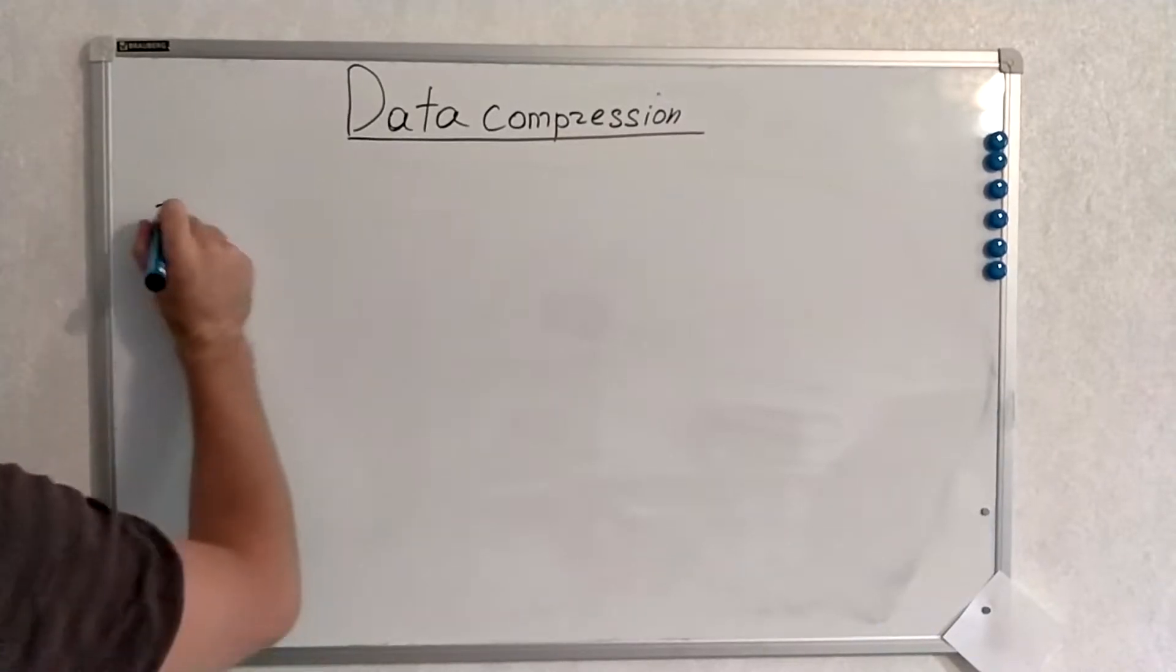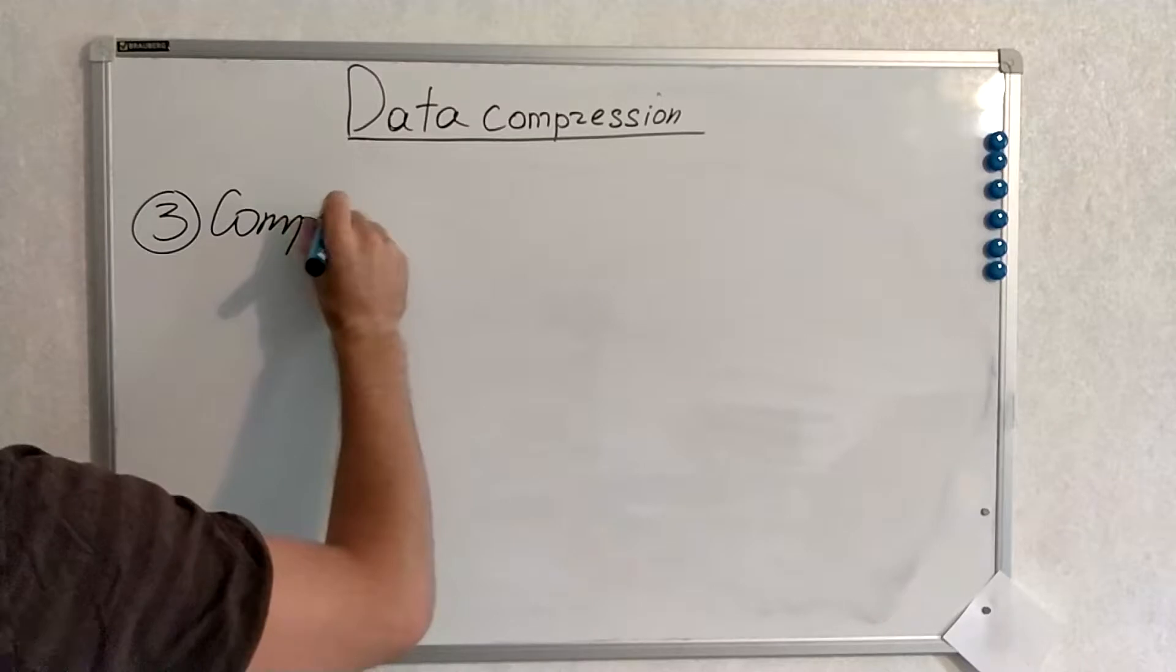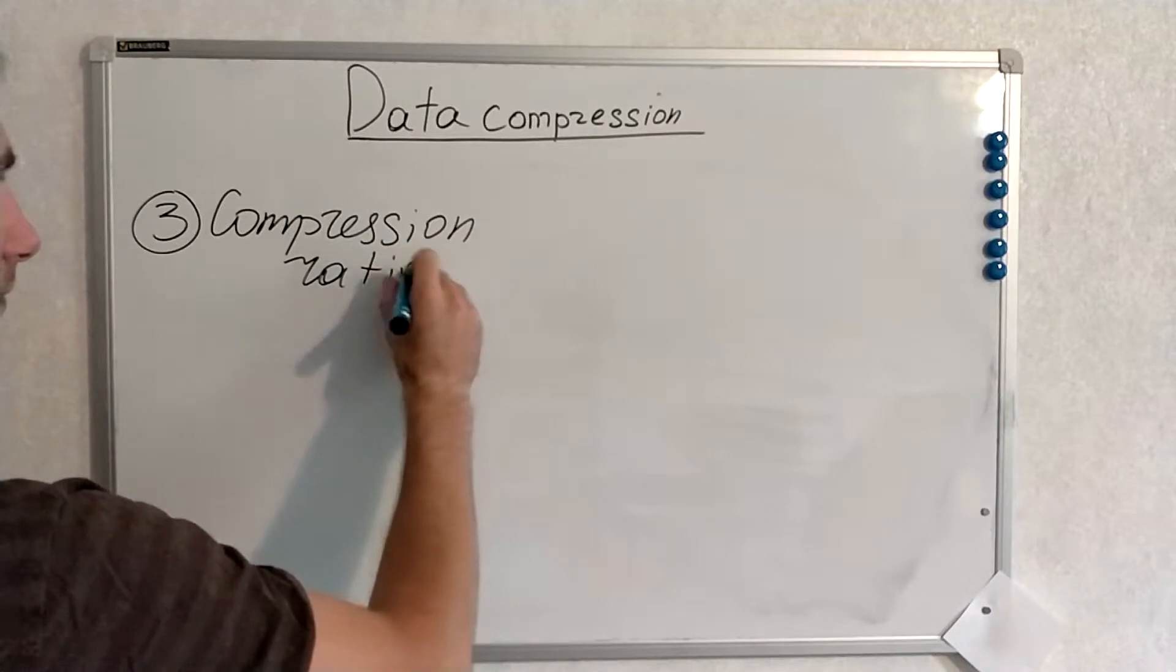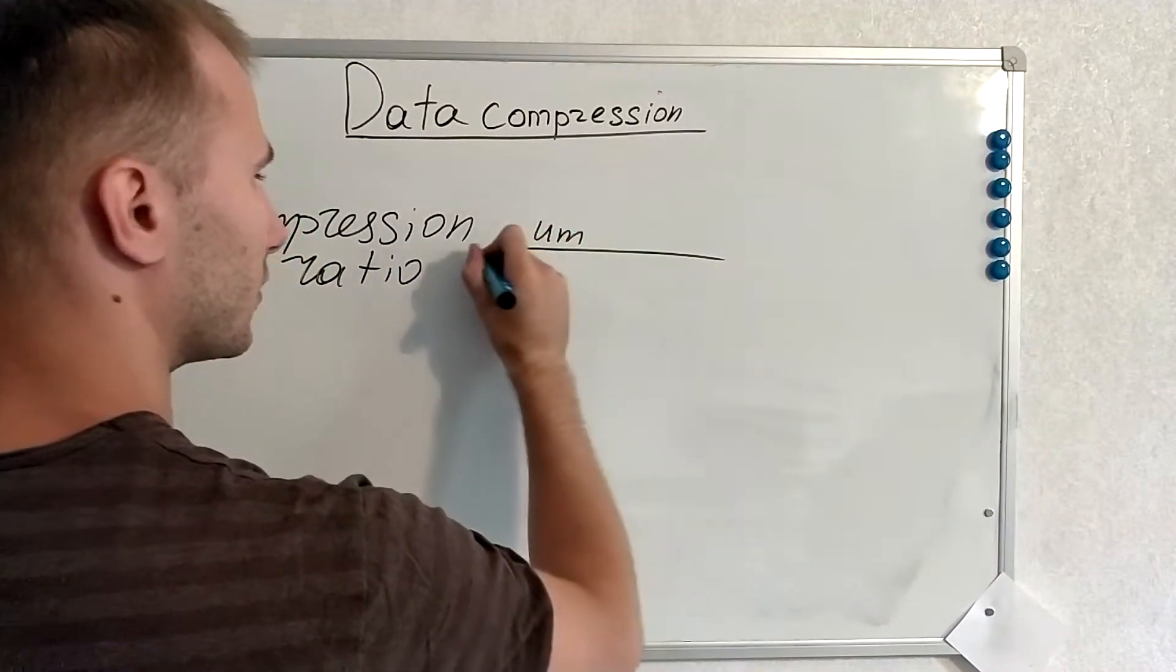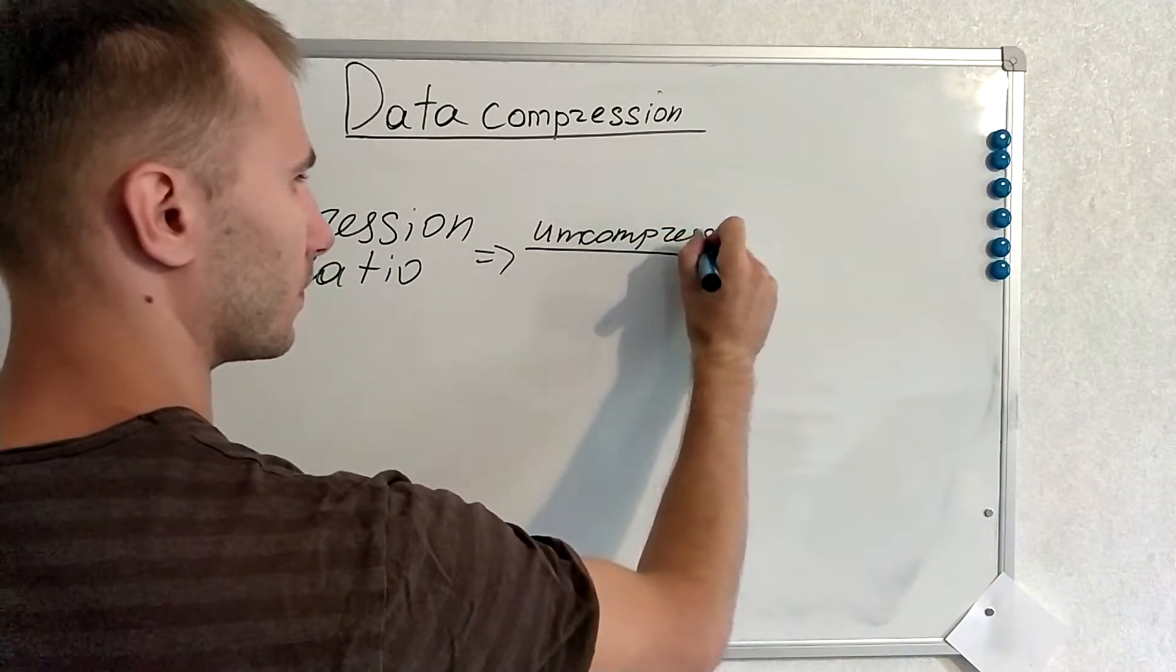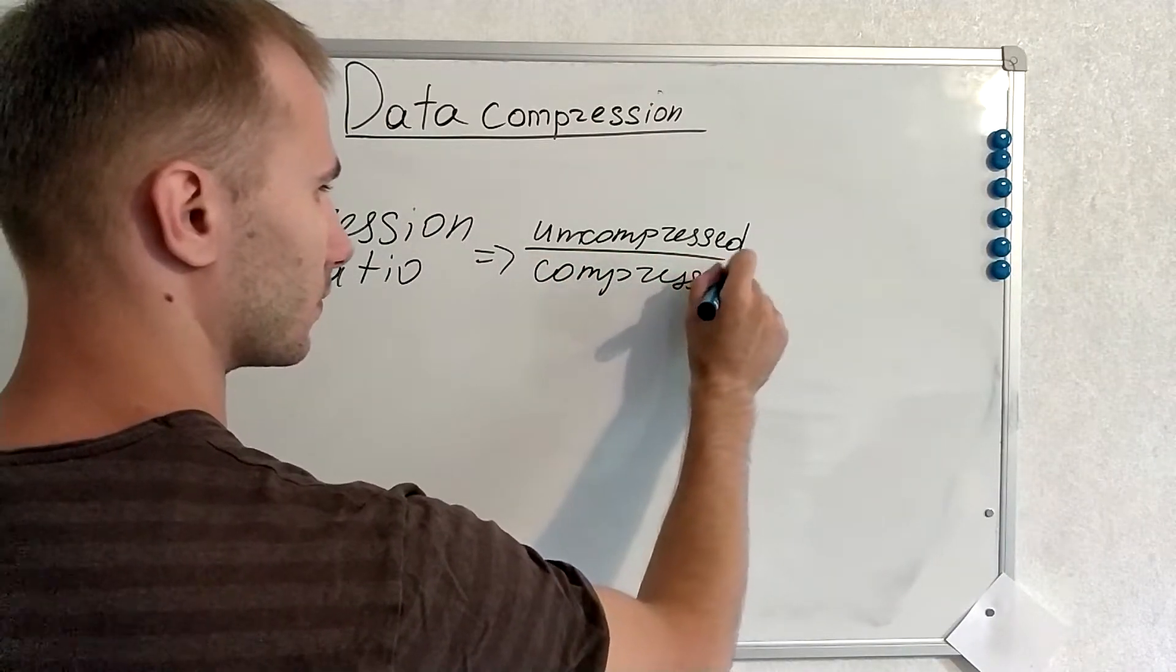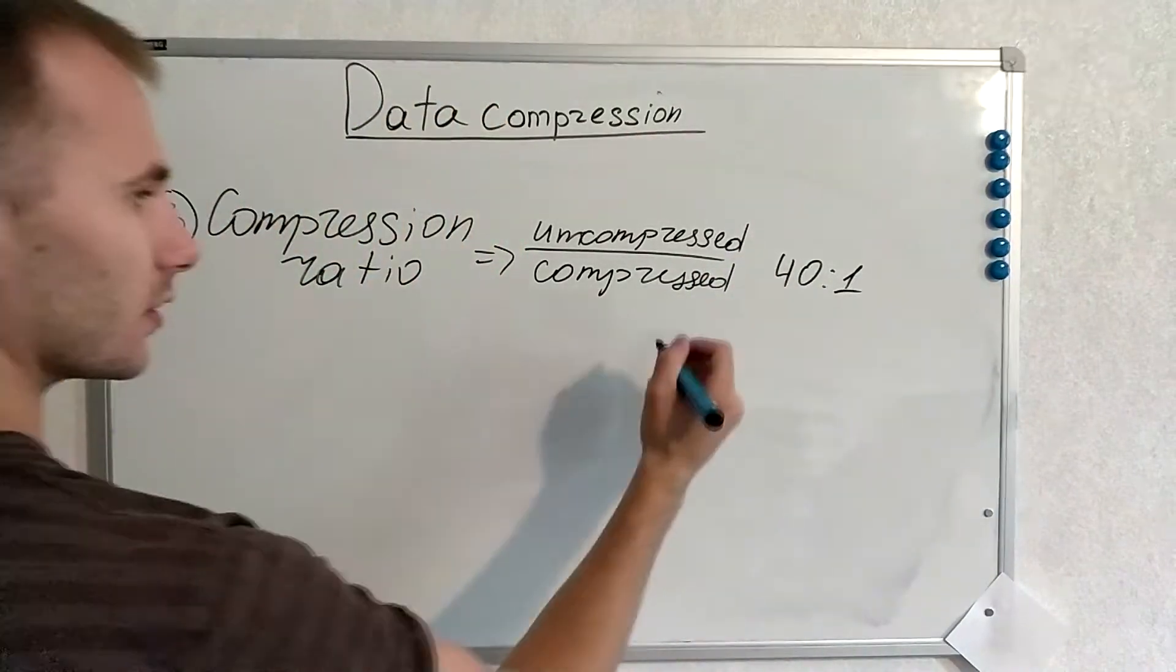Okay, our first definition. Compression ratio. This is the amount of uncompressed data divided by compressed. Typically it can be 40 to 1 in lossless.